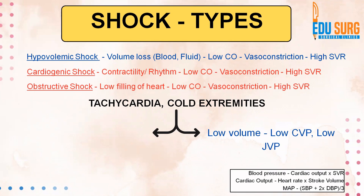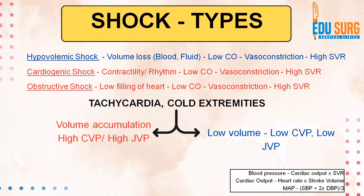How to differentiate? Low volume will result in low CVP or central venous pressure — clinically, low jugular venous pressure. So when we are talking of hypovolemia and volume loss, the CVP will be low and JVP will be low. Remember that all of these shocks will have tachycardia and cold extremities. Step by step, once you have identified the shock and the type, you look at the extremities — they are cold, there is tachycardia. You look at the JVP or CVP: if it is low, you are looking at hypovolemic shock.